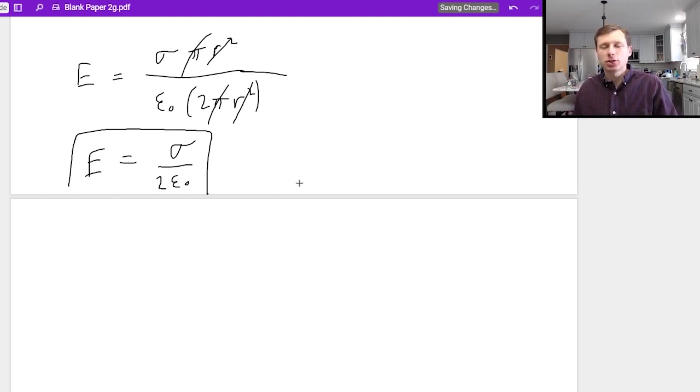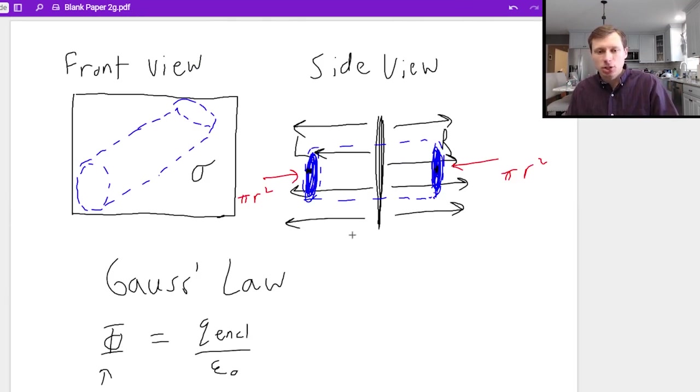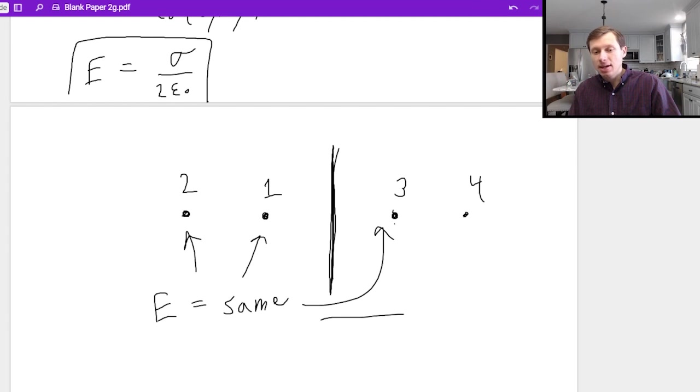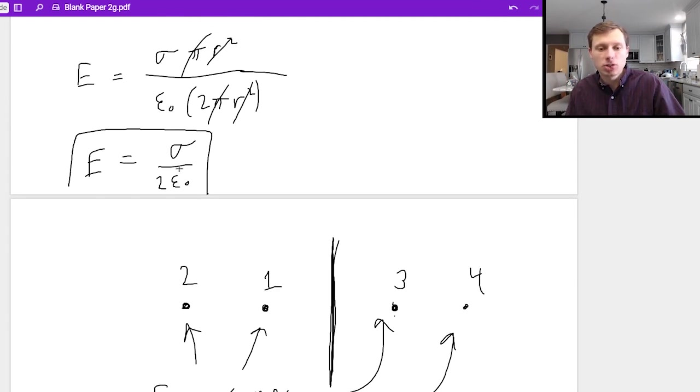And there is our equation for the electric field at points L and R. And this has some pretty cool implications. What I mean is that if I go back to my picture, I'll just redraw it, if I look back at my side view, that means if I have this point here point one, and this point here point two, and this point here three, and this point here four, it means the electric field at all of those points is going to be the same. Why is that? Because where in my equation do you see the distance away? There is no variable. So that means the electric field must be the same everywhere.